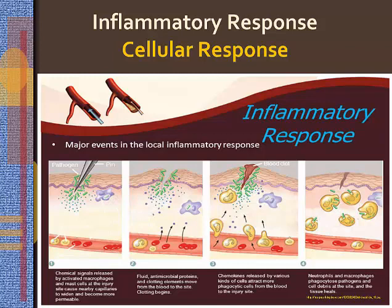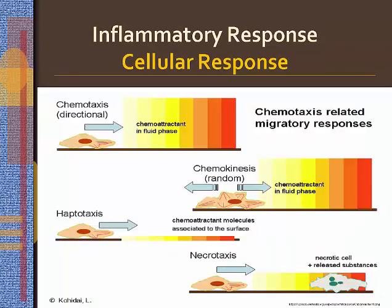Blood flow through the capillaries in the area of inflammation slows as fluid is lost and viscosity increases. Neutrophils and monocytes move to the inner surface of the capillaries and then migrate through the capillary wall to the site of injury. Chemotaxis is a directional migration of white blood cells along a concentration gradient of chemotactic factors, and it is the mechanism for accumulating neutrophils and monocytes at the site of injury.